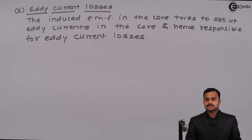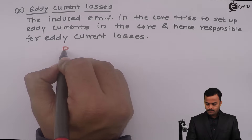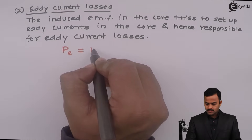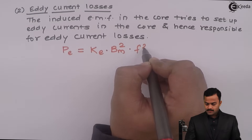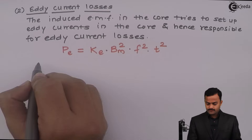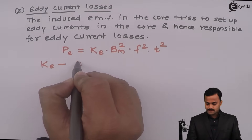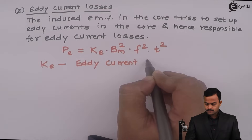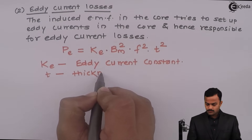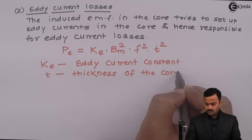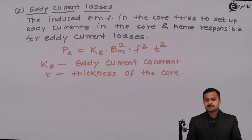Like hysteresis losses, eddy current losses also depend upon the dimensions of the core. The formula is: P_E = K_E × B_M² × F² × T², where K_E is the eddy current constant and T is the thickness of the core. The remaining parameters — B_M (maximum flux density) and F (frequency) — remain the same as in the hysteresis loss formula.